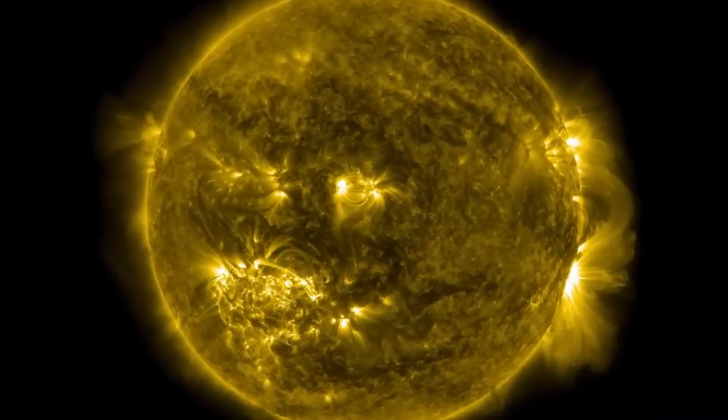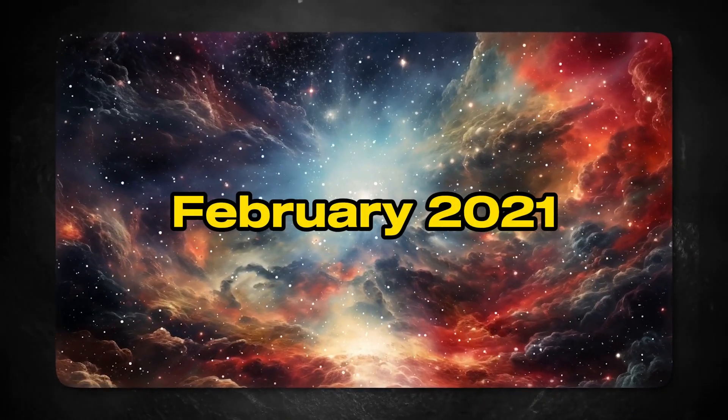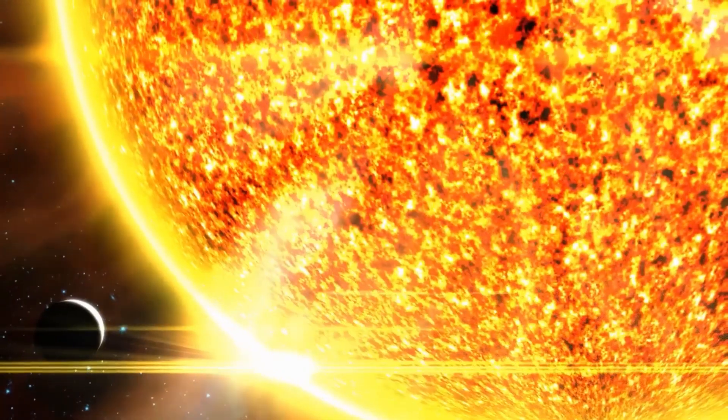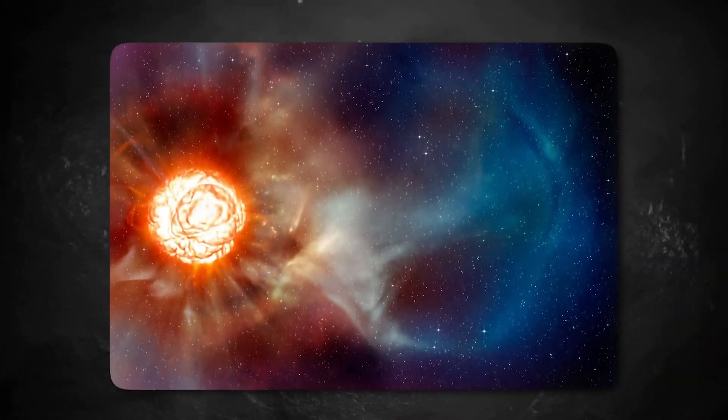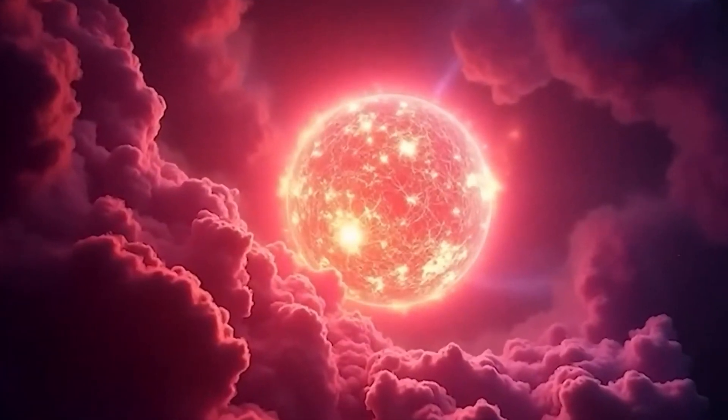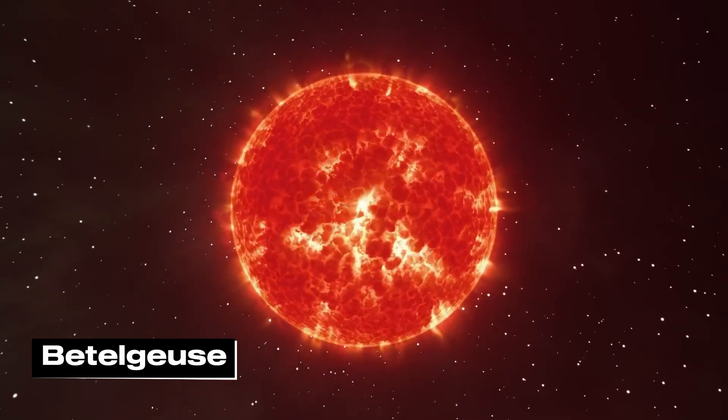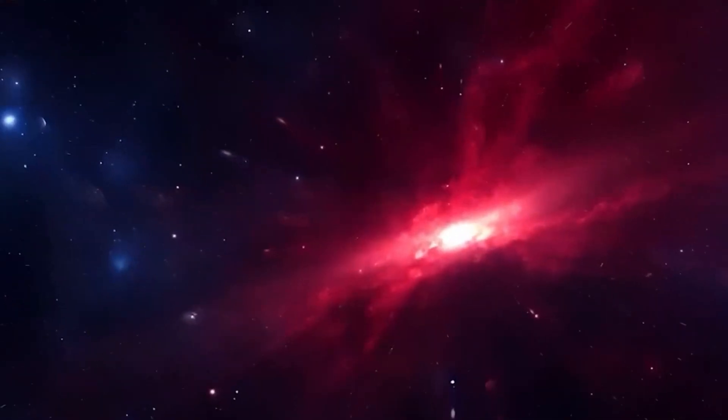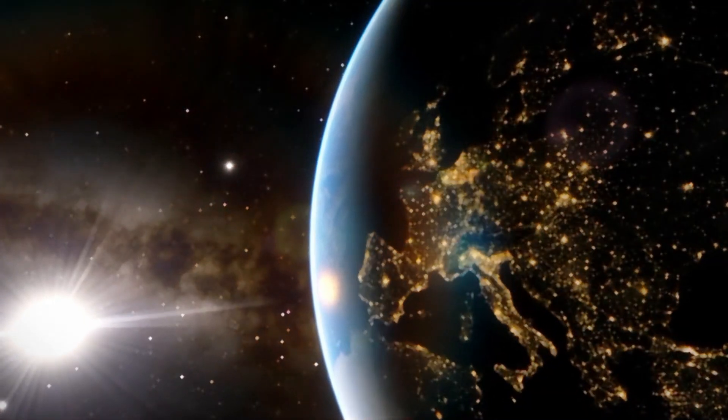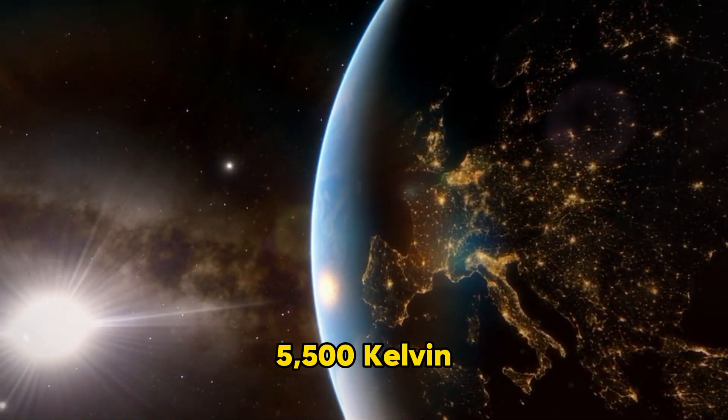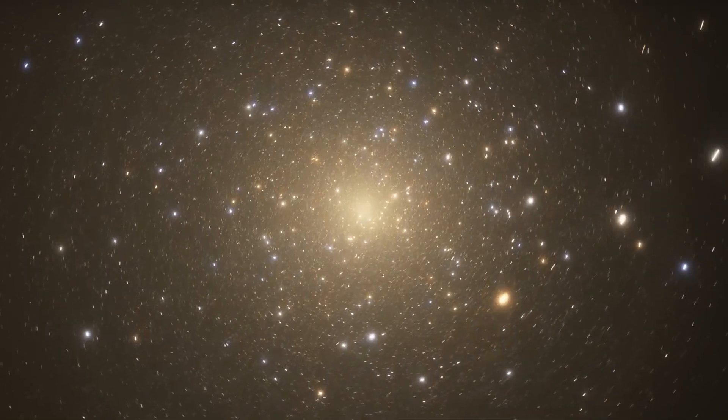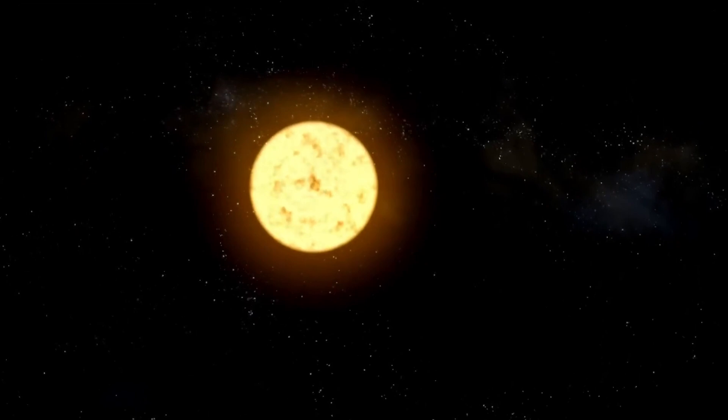Betelgeuse can get very dim at times. In February 2021, when it was around 1.614, its size was one of the smallest in recent memory. You can still see it in the sky at night, but it's not as bright as normal. In addition to being very bright, Betelgeuse is known for having a very bright red color. Its color comes from the fact that its surface temperature is 3,500 Kelvin, which is much lower than the sun's 5,500 Kelvin.